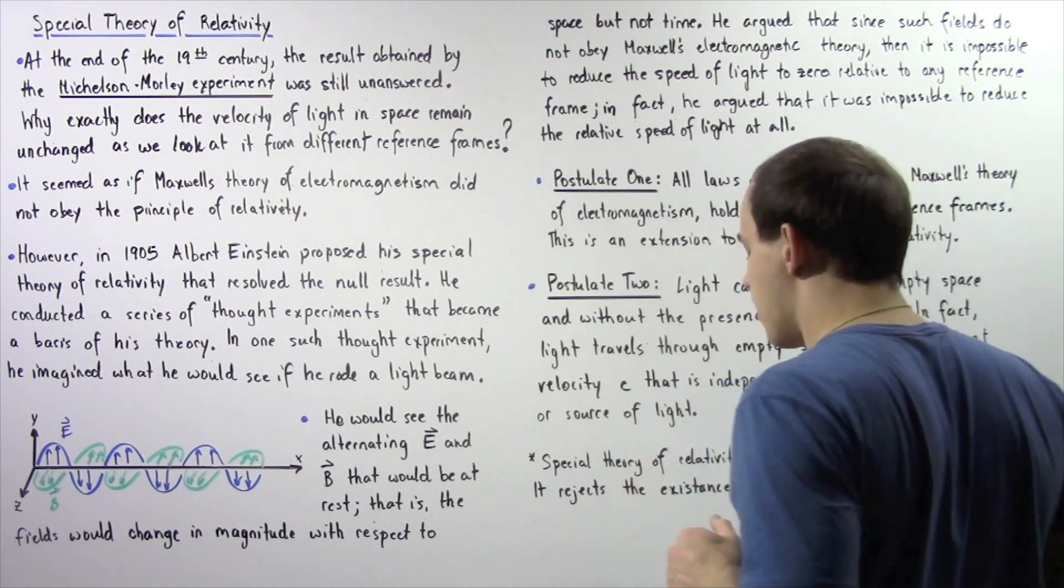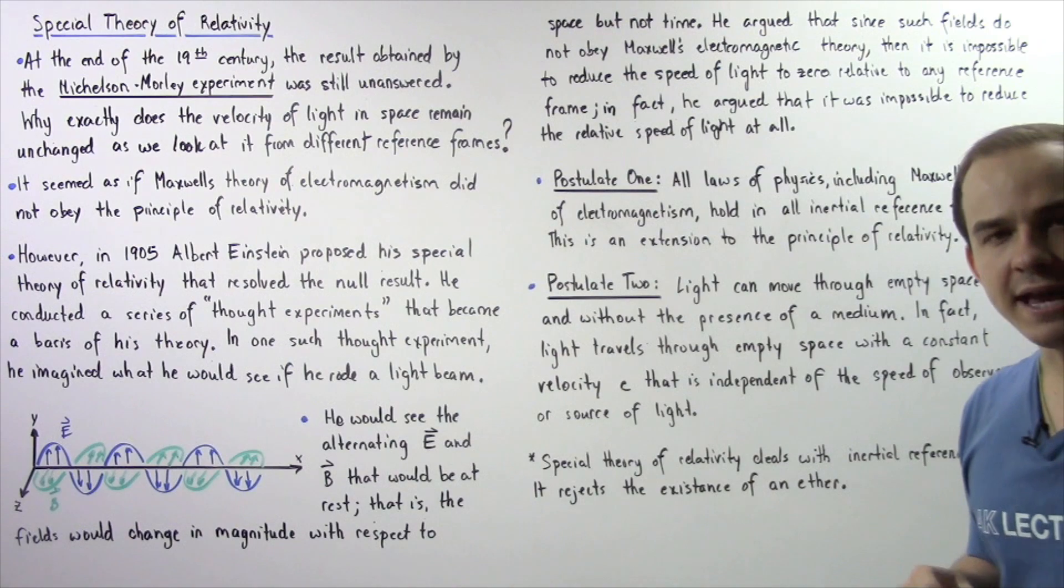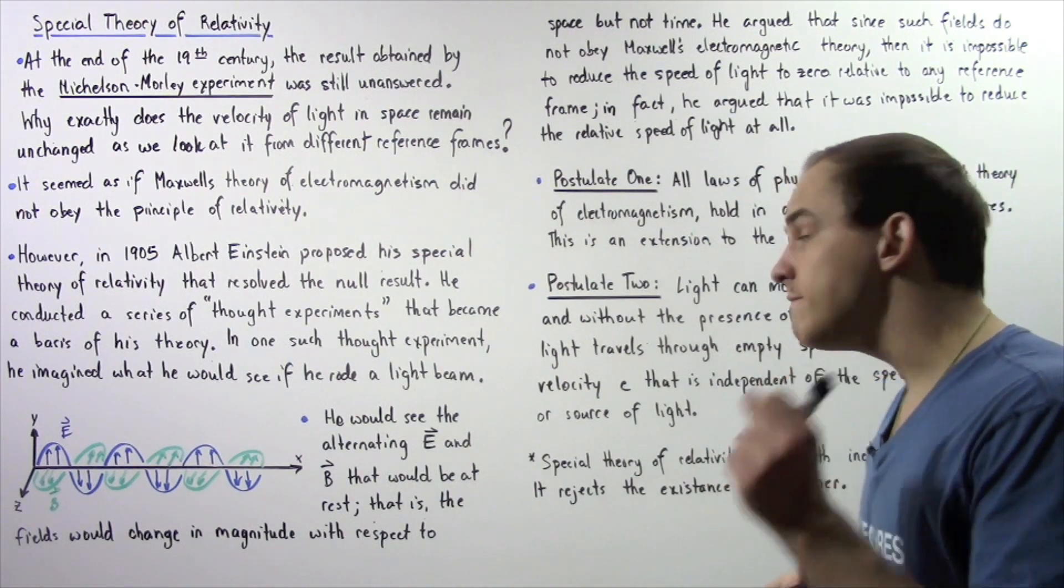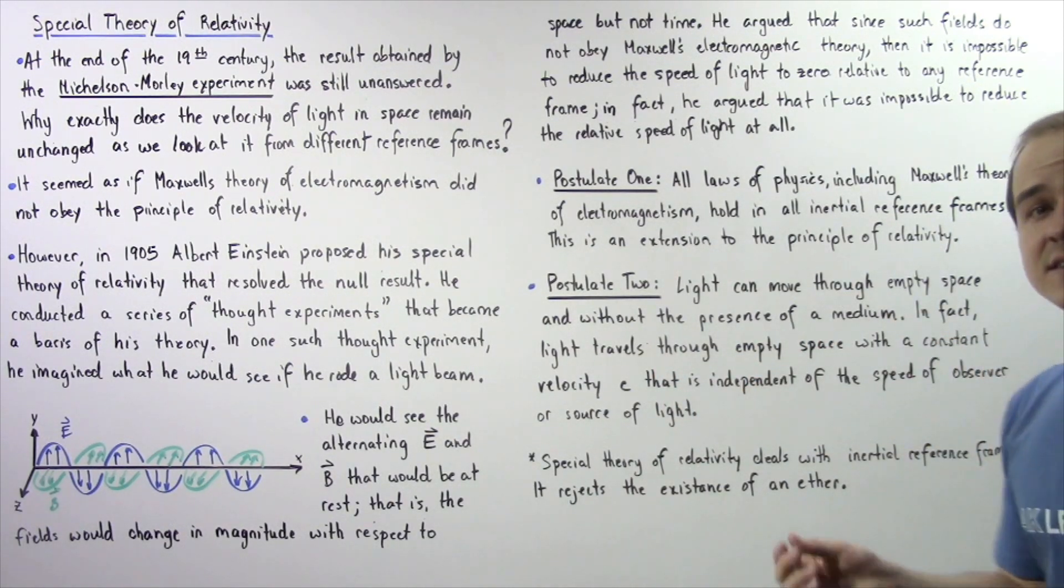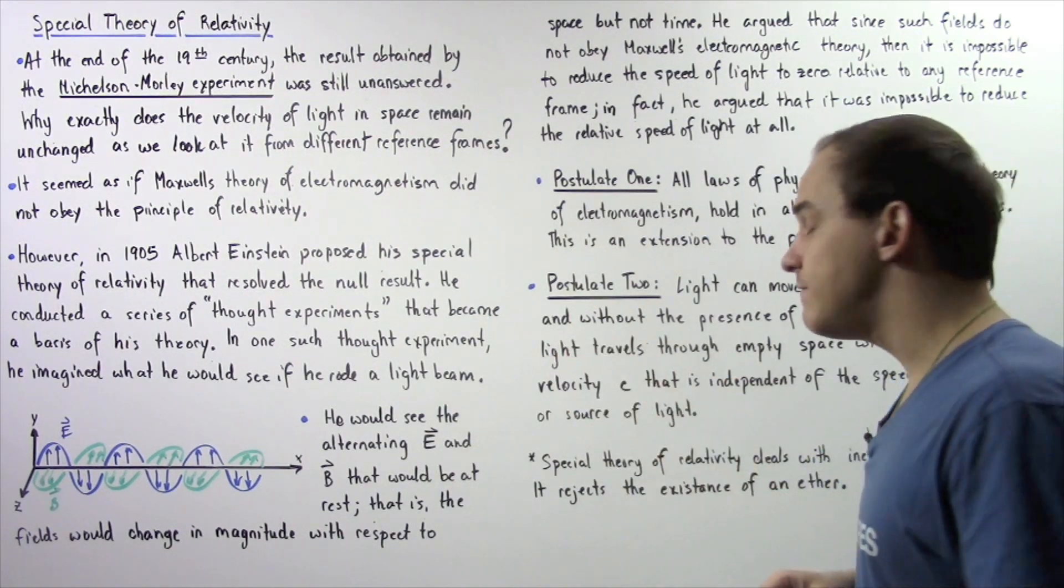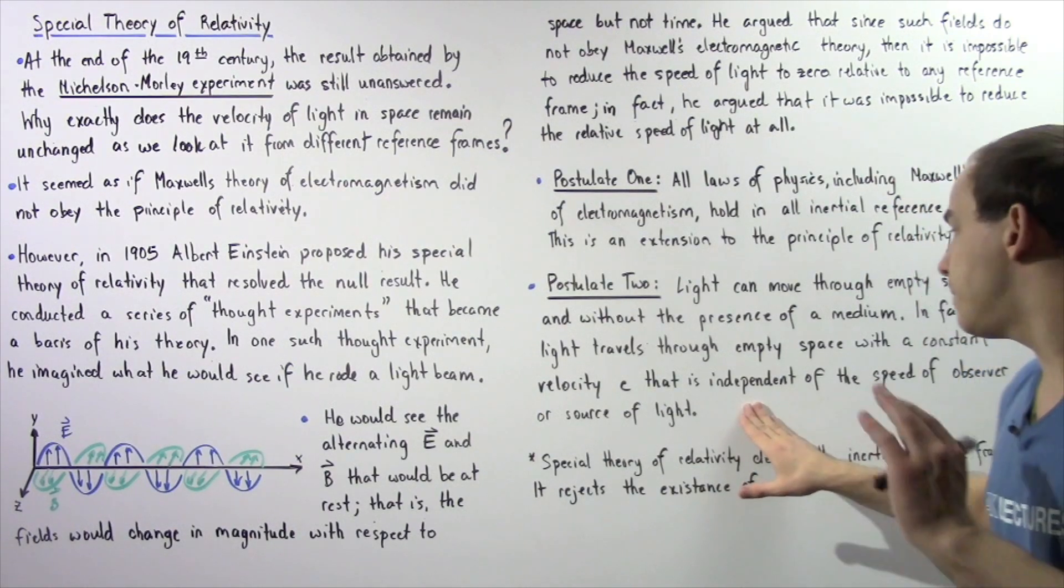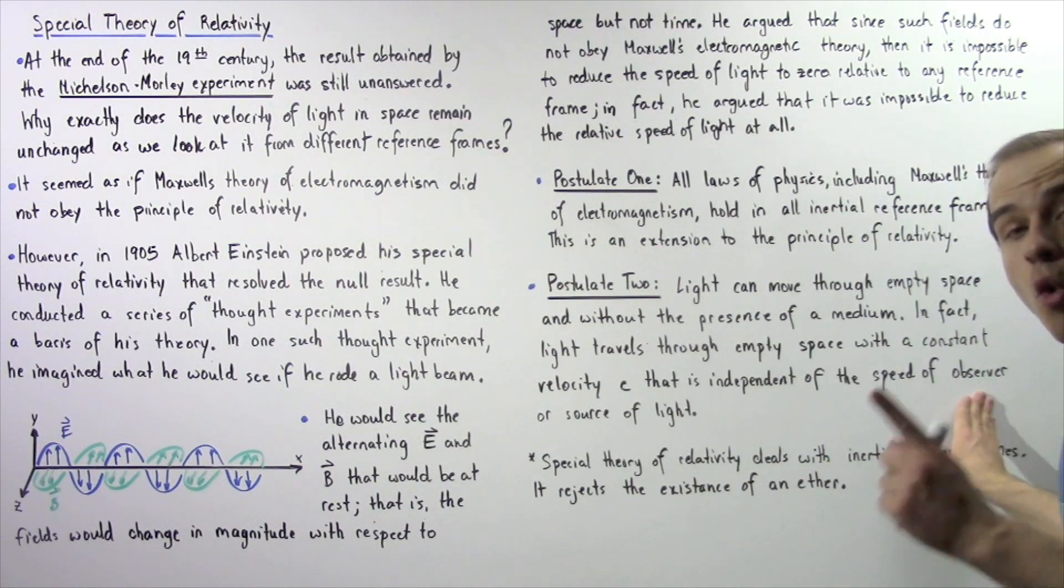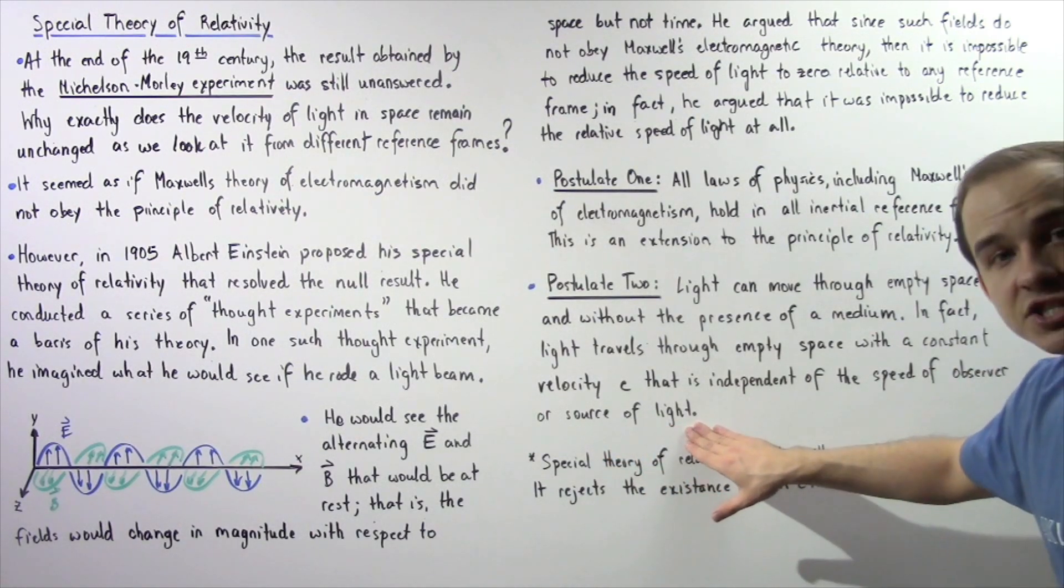Now let's move on to postulate number 2. Postulate number 2 states the following: Light can move through empty space without the presence of any type of medium. In fact, light travels through empty space with a constant velocity, C, 3 times 10 to the 8 meters per second, that is absolutely independent of the speed of the observer or the source that's creating that light.